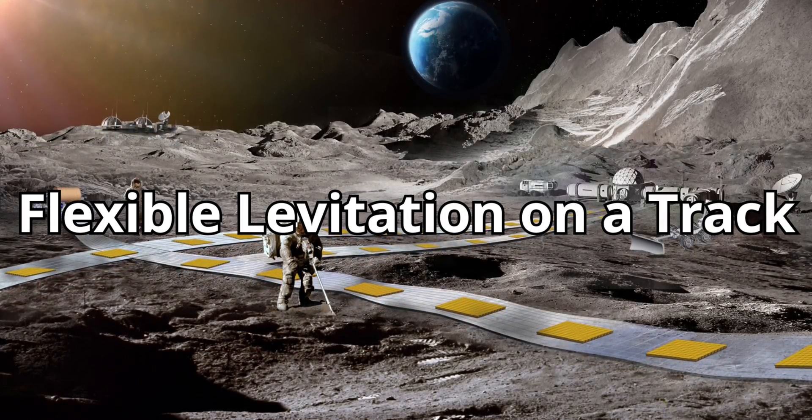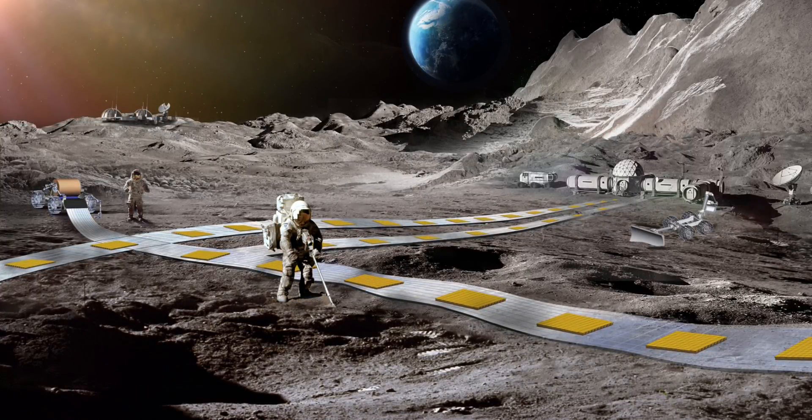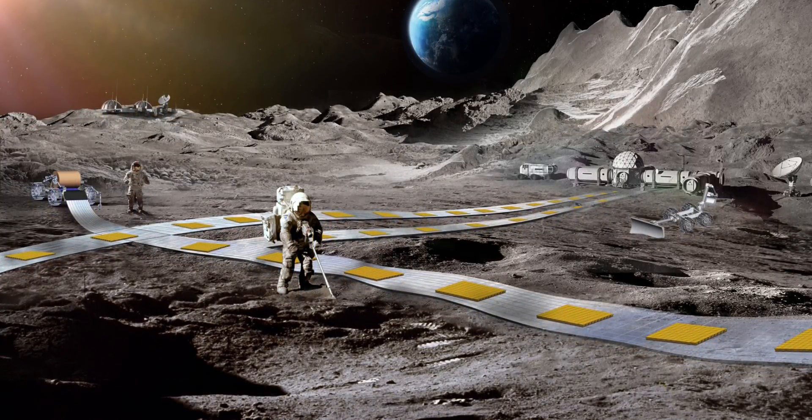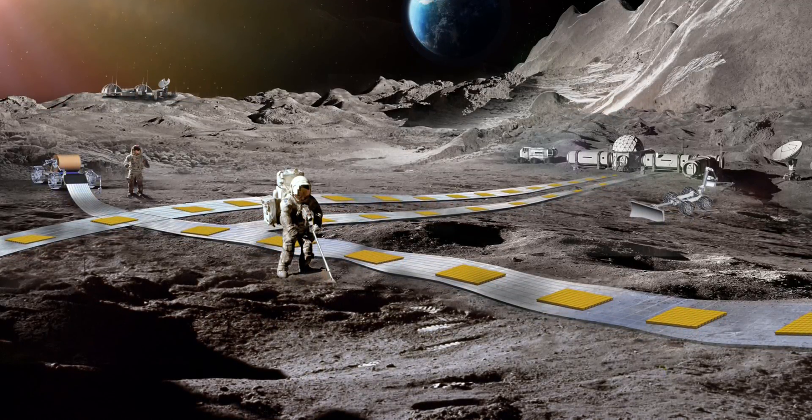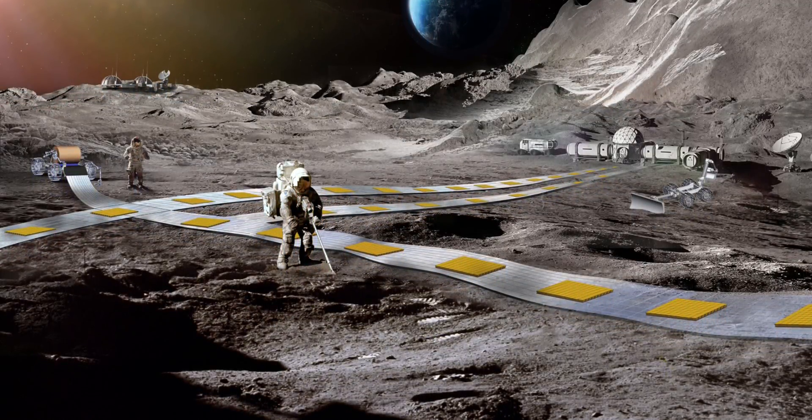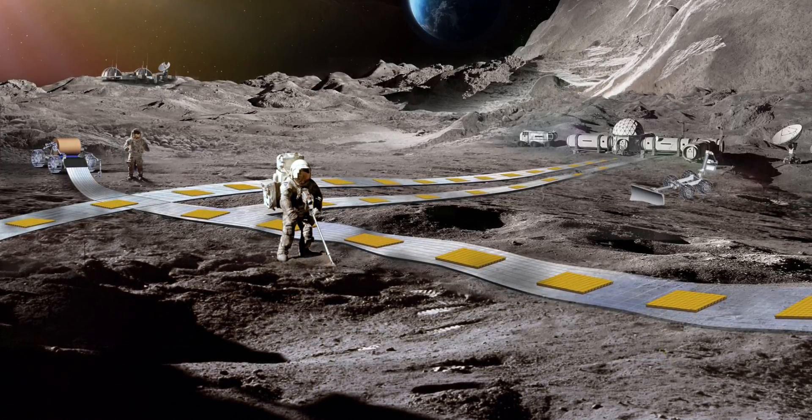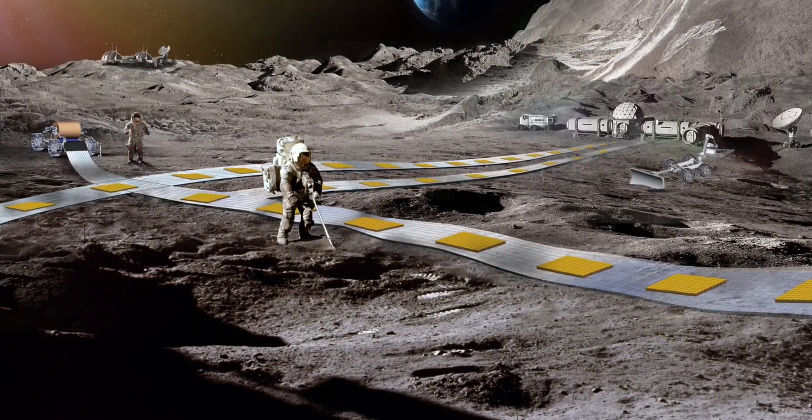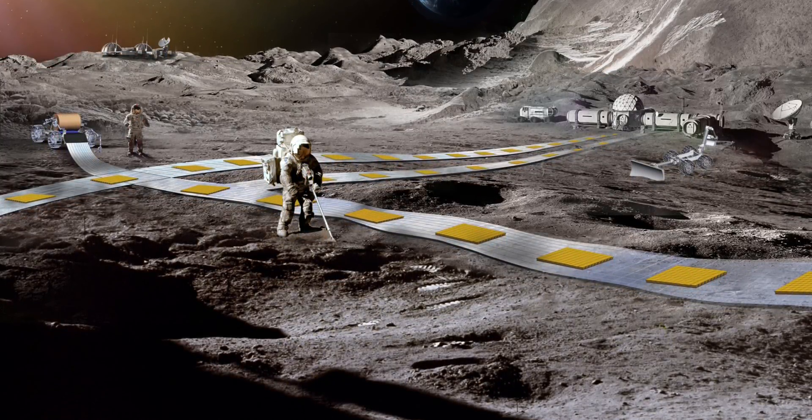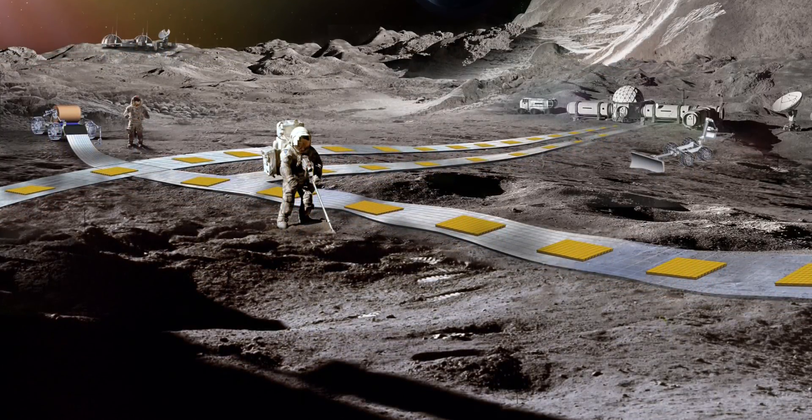Enter the Flexible Levitation on a Track, or FLOAT. His imagination fueled by the continuous expansion of our space exploration plans, many of which target the Moon, Ethan Schaler from the Jet Propulsion Laboratory came up with the idea of a railway-like transport system to be deployed up there. I say railway-like because the entire idea relies on a flexible film track being laid on the ground.